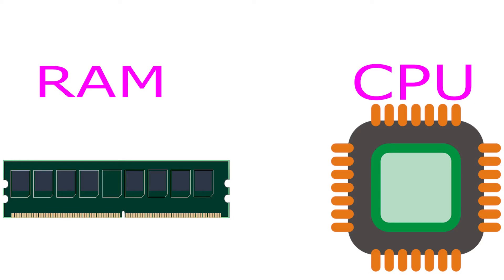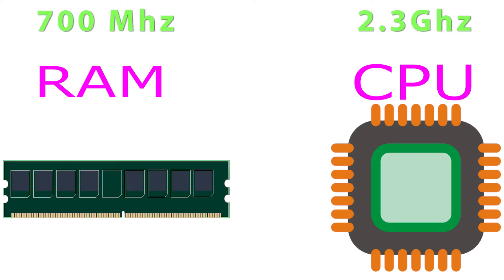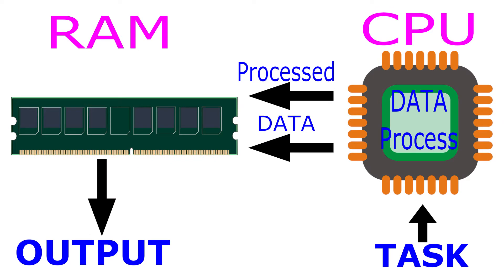Suppose your mobile has 1GB RAM and it runs at 700MHz, and you have an octa-core processor which runs at 2.3GHz. You can see the difference in speed between the RAM and the processor. When you give some tasks to the CPU, like opening a web page or any software, the CPU processes the order and tells the RAM to give the output as fast as possible.